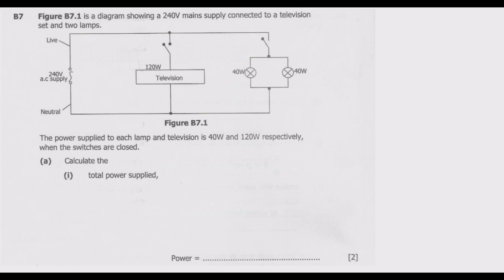Figure B7.1 is a diagram showing a 240-volt main supply connected to a television set and two lamps. The power supply to each lamp is 40 watts and to the television is 120 watts respectively when the switches are closed. Question A: calculate the total power supplied.